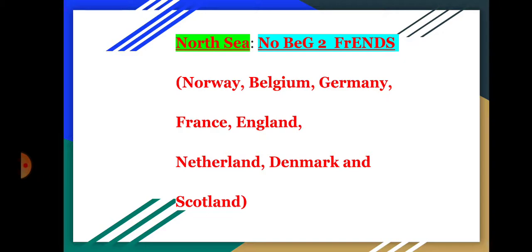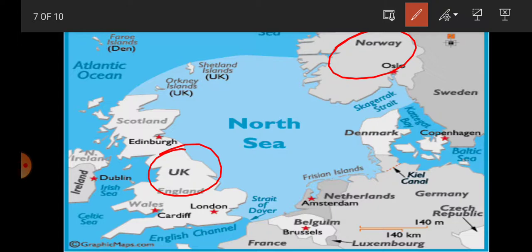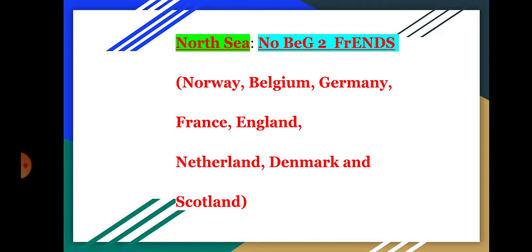So: 'N' stands for Norway, 'B' for Belgium, 'G' for Germany, 'E' for France — wait, let me correct that — 'N' for Norway, 'B' for Belgium, 'G' for Germany. These are the first countries in our mnemonic for the North Sea bordering nations. Please note them down and mark them on the map.